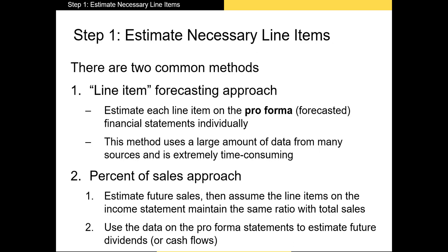Step one involves forecasting the line items on the income statement and balance sheet that we can use to estimate our cash flows or dividends. There are two approaches. The first is the line item approach, where we estimate each line item for the next several years by looking through macroeconomic, industry, and firm level sources. For example, reading through the firm's MD&A statement on the 10-K might give us a sense of the growth rate in operating expenses and sales in the coming years.